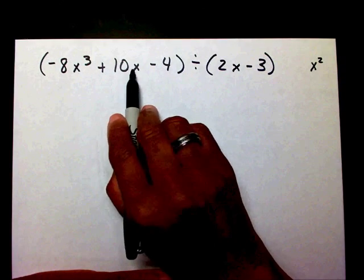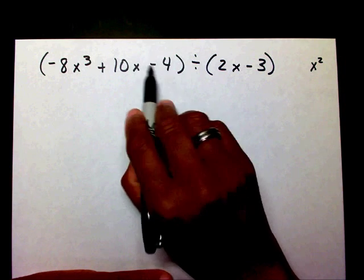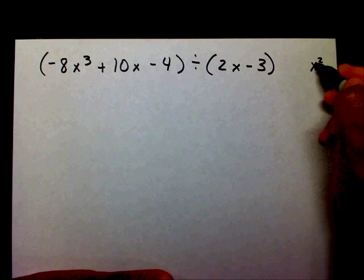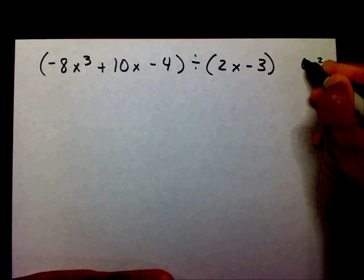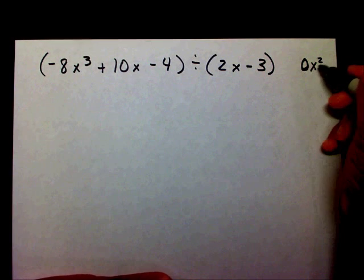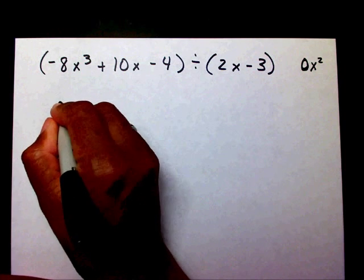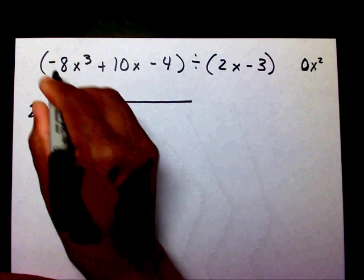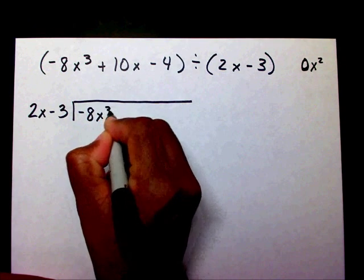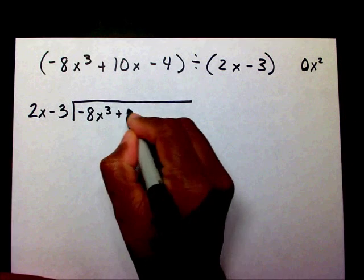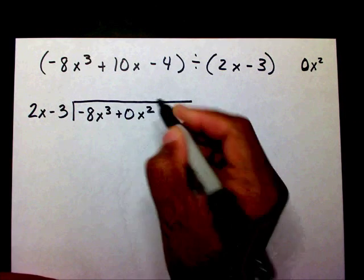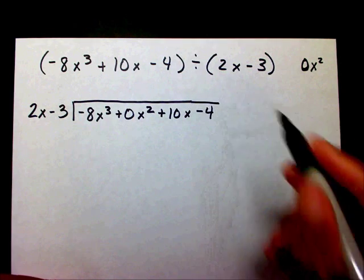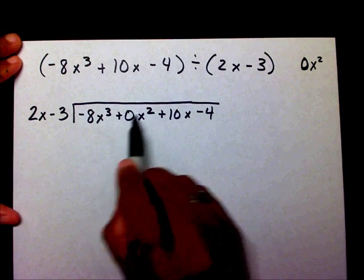You have x to the first, and you have your constant. So when we divide, we have to include the x squared term, and we're going to say 0x squared because we have 0x squared. So I'm going to write the problem as negative 8x to the third plus 0x squared plus 10x minus 4. I'm going to show you why we need this in a couple of seconds.